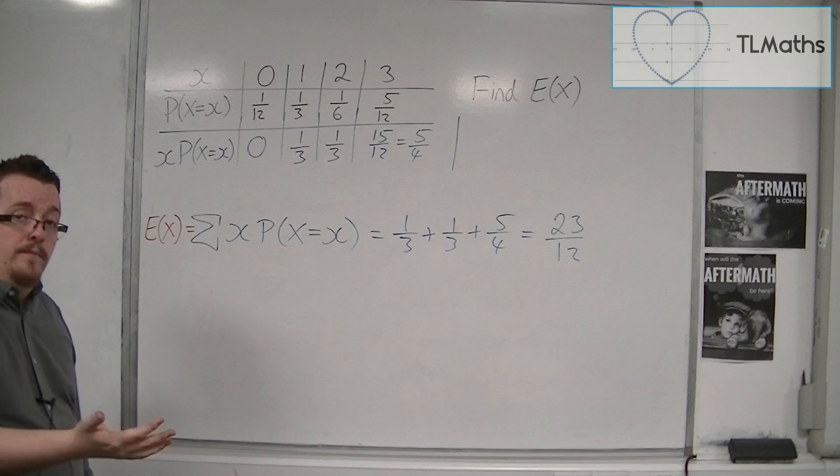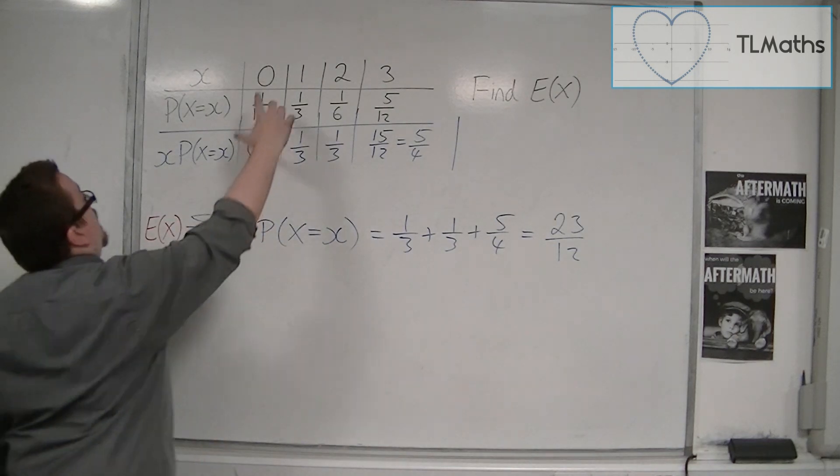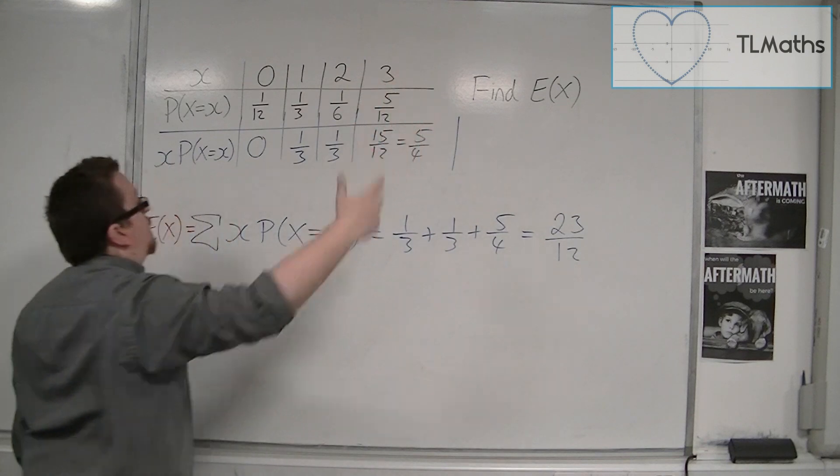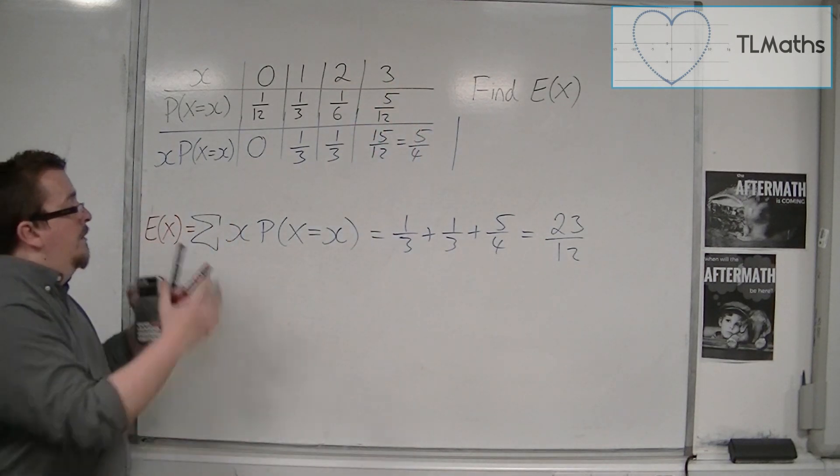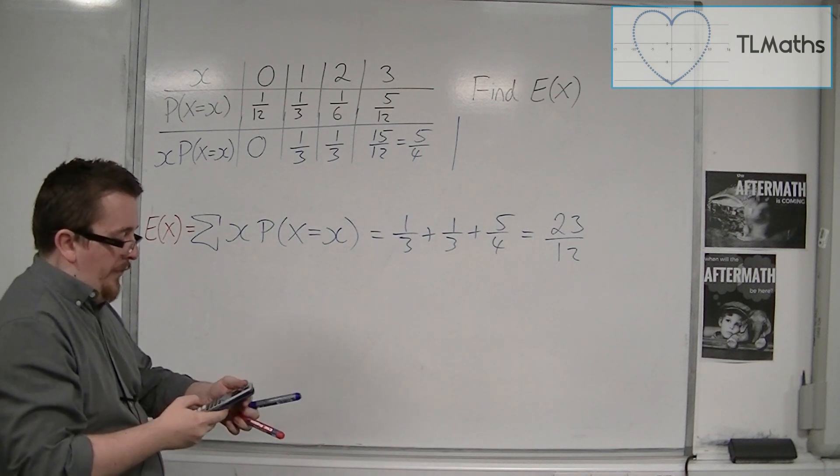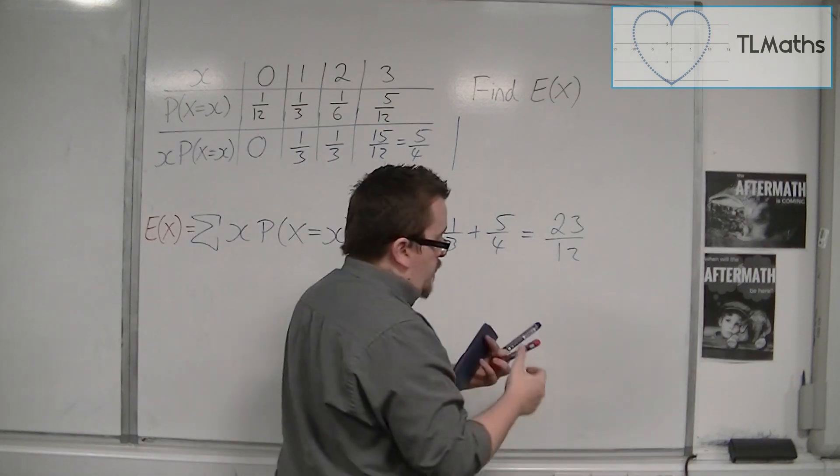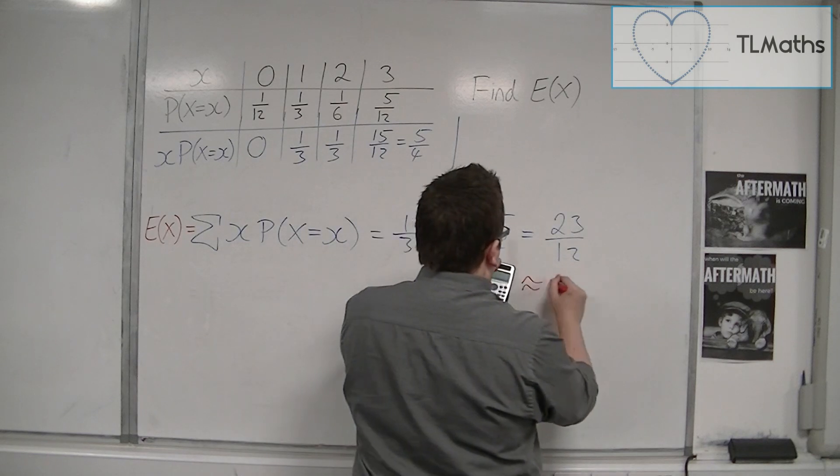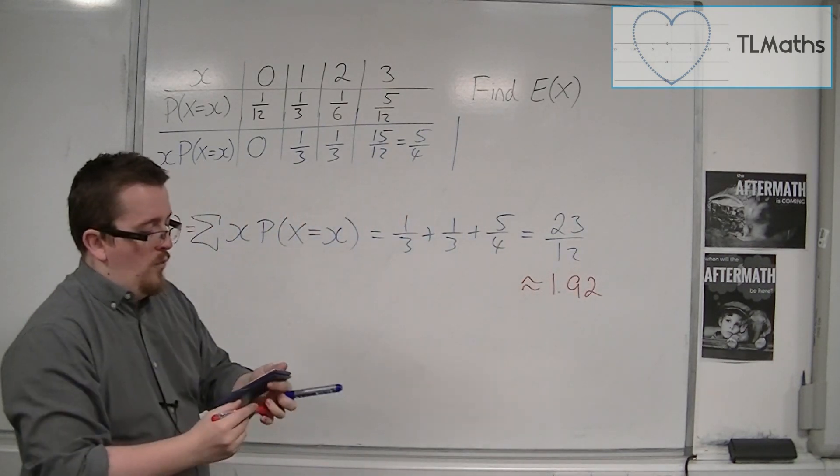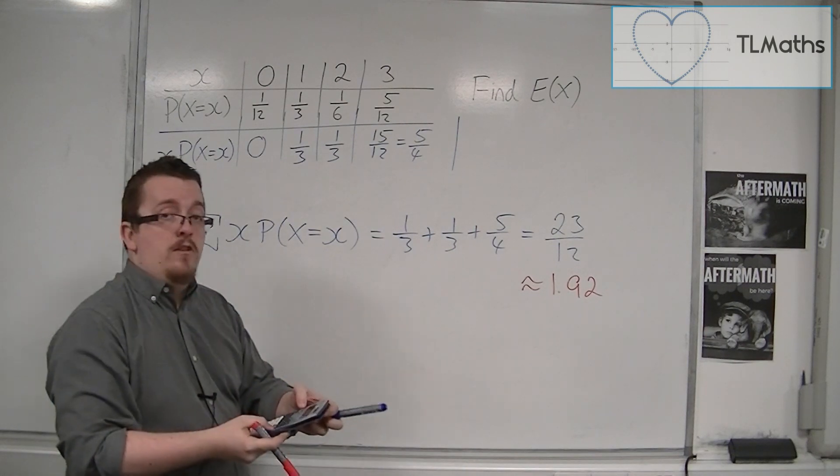Exactly what we've done there. So multiply the x's by their probabilities and add them up. So 23/12. It's not a whole number. 23/12 is approximately 1.92, or 1.916 recurring.